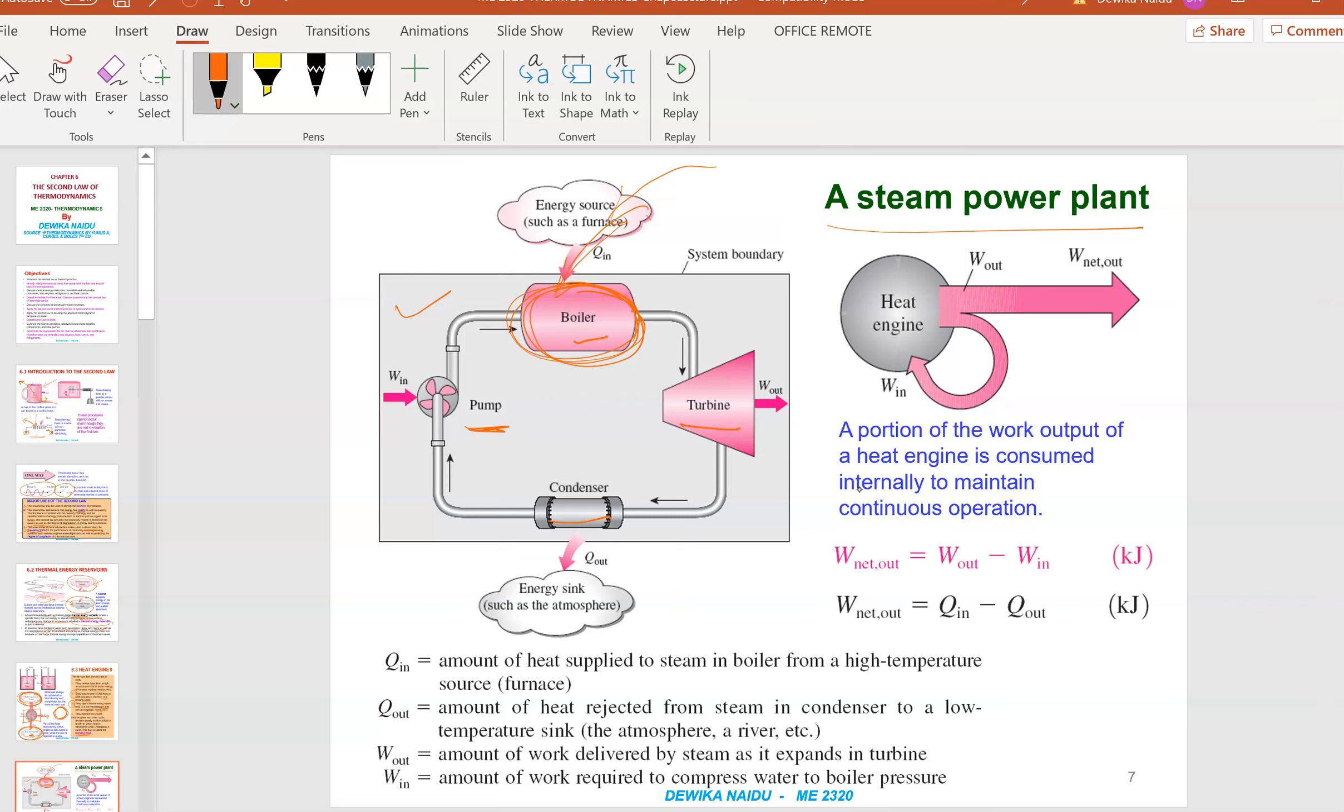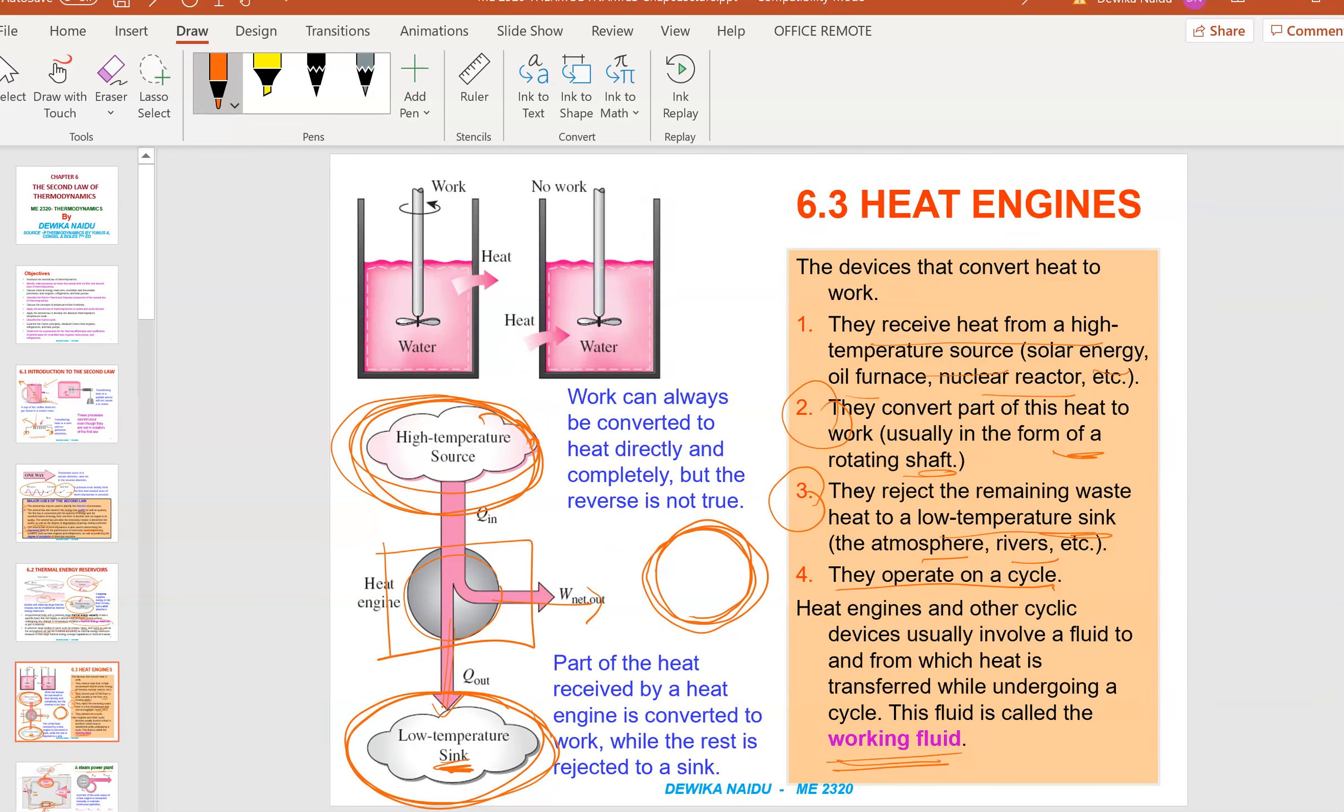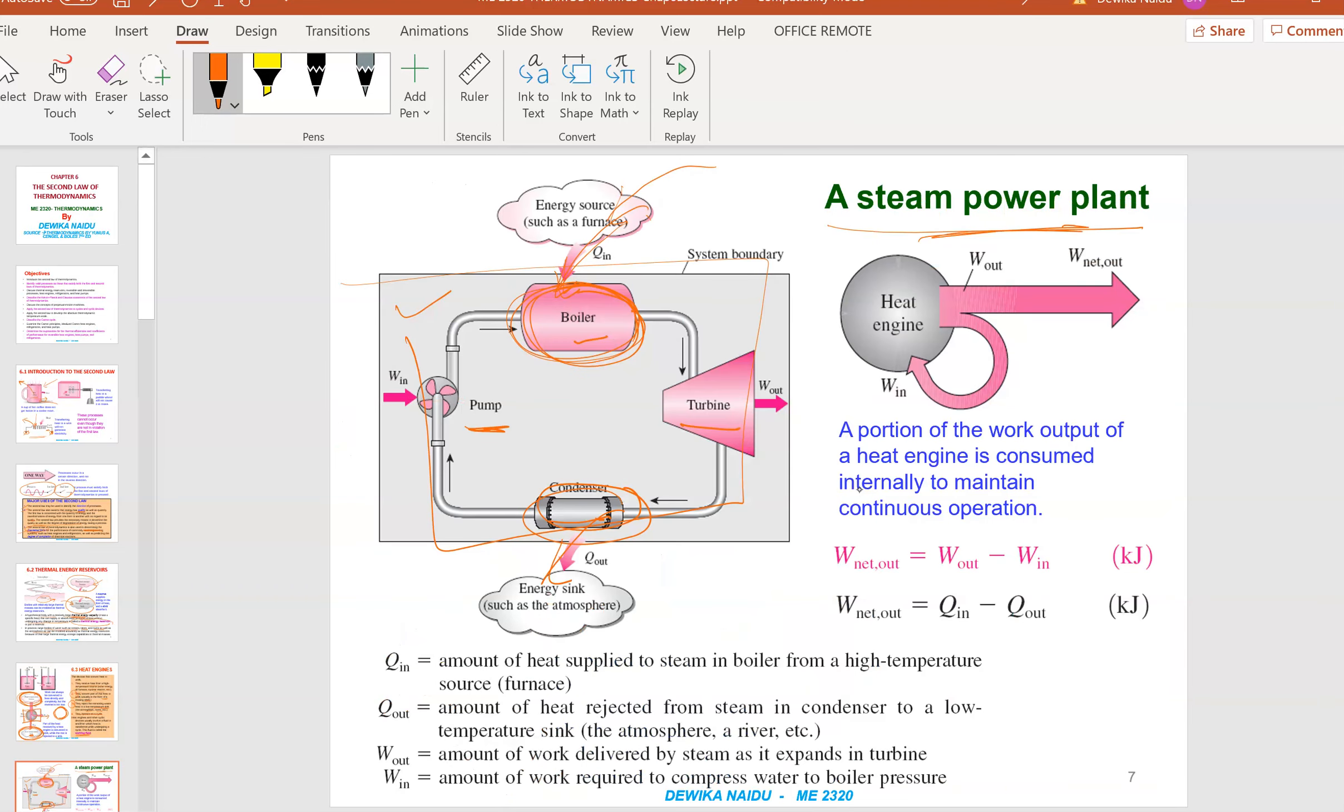In the real case process, it's actually happening within the process. Where is it from? It's from the furnace, and then it supplies to the boiler. The condenser releases to the atmosphere. It's actually one whole system, the power plant itself, but for drawing sake, to make our life easy, we draw it this way: we have source, we have sink, and then we have heat engine in the middle. Q in is the amount of heat supplied to the steam in the boiler from high temperature, for example the furnace. Q out is the heat rejected from the steam in the condenser to the low temperature sink, for example to the river or to the atmosphere. Work out is the amount of work delivered by the steam as it expands in the turbine. Work in is the amount of work required to compress the water to boiler pressure, like using the pump.